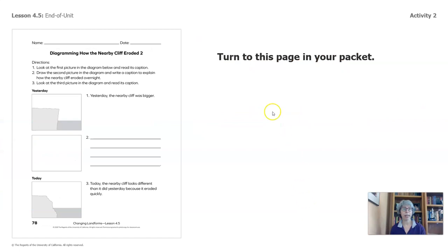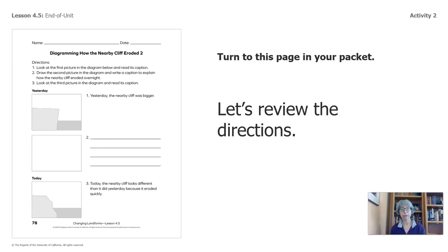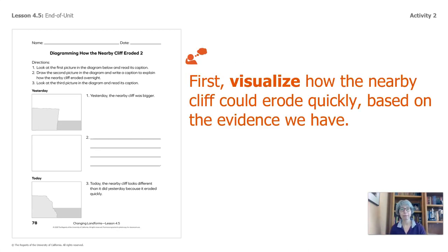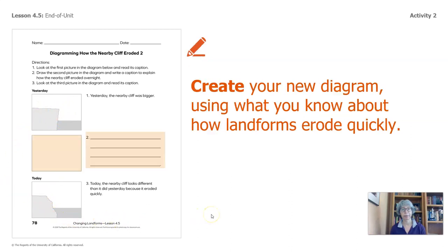I'd like you to turn to this page in your packet — diagramming how the nearby cliff eroded. Let's review the directions. And remember, if you do not have the packet, any piece of paper that you have in your household and a pencil will do just fine. First, let's visualize how the nearby cliff could erode quickly based on the evidence we have. In this diagram, from yesterday the nearby cliff was bigger, and then today you can see that it's been worn away — it doesn't have that same angle, it's kind of crumbly right here. Now I'd like you to create your new diagram in the center, using what you know about how landforms erode quickly. If a family member is available, maybe the two of you can get together and do this together. Go ahead and pause the video so that you can work on it.